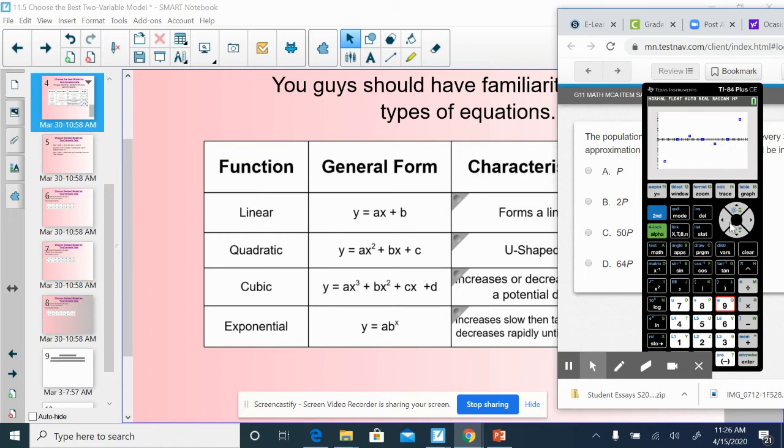Now I need to tell the calculator, please write the equation for that data table. I can do that by going back into the stat. Before I went to stat and edit and I entered the information. Now I'm going to go over to calculate because I want it to calculate the line at best fit. If your line was linear, you would choose linreg. If it was quadratic, you would choose quadrag.